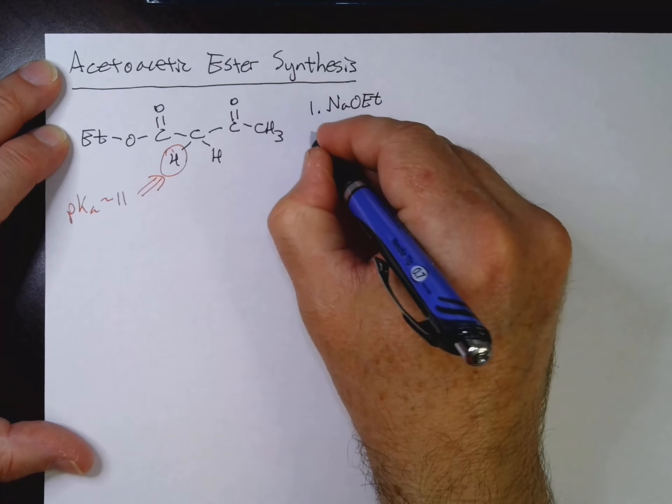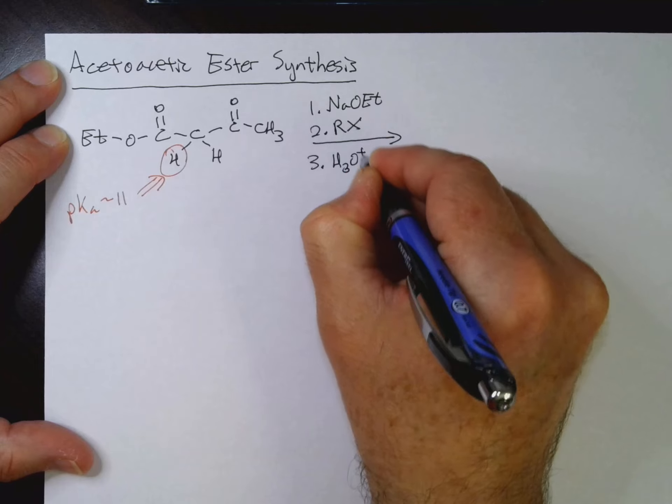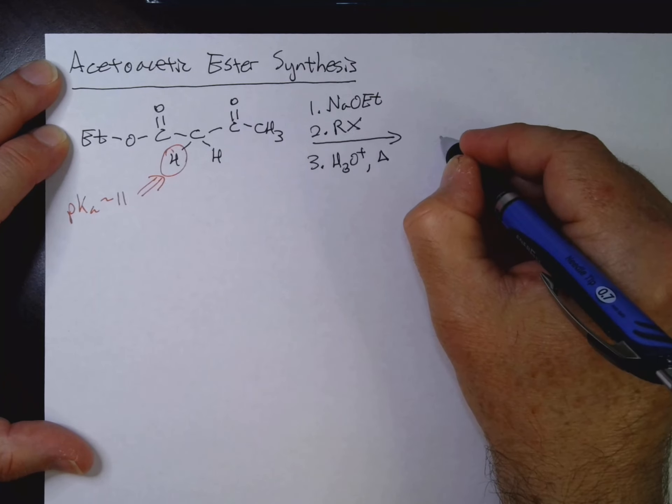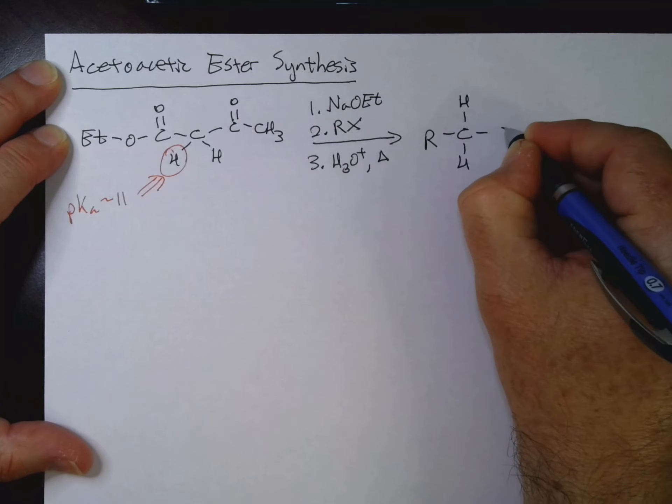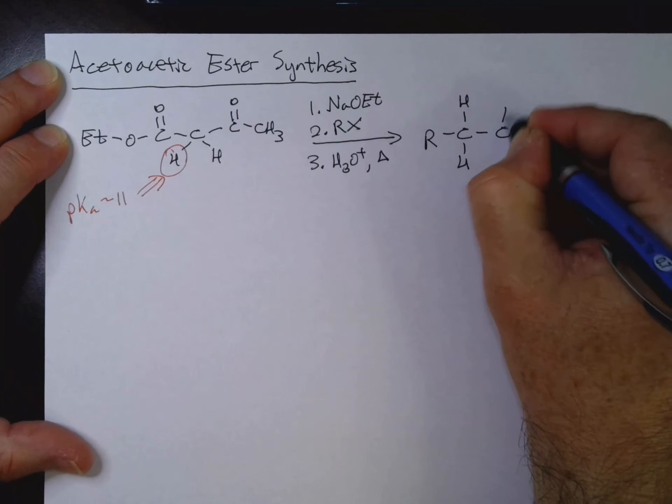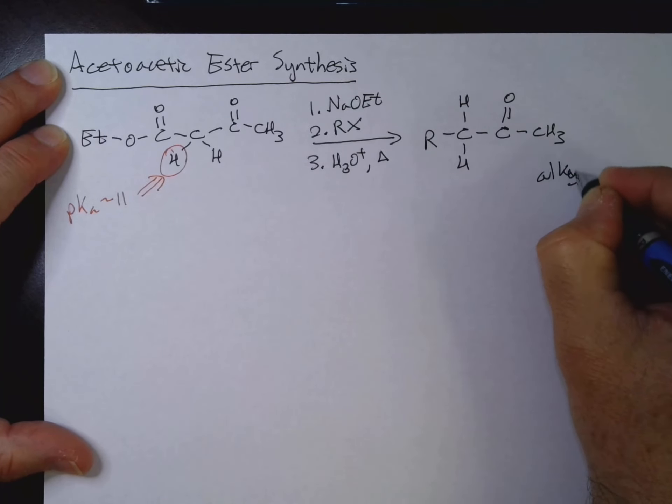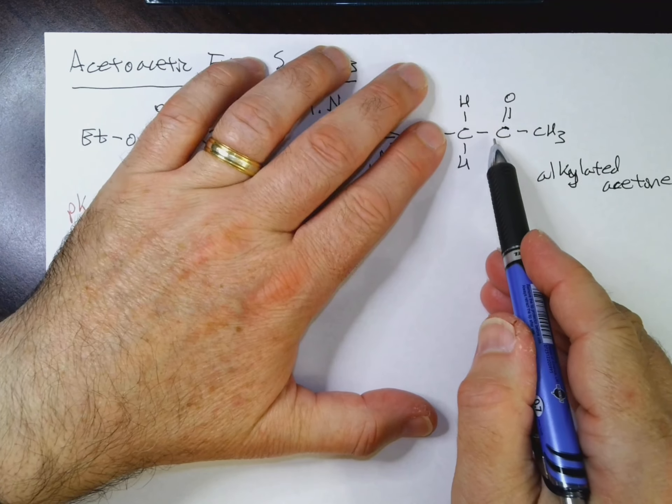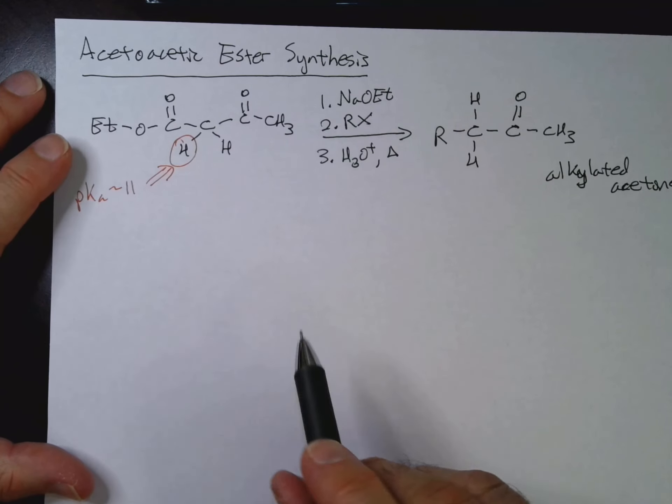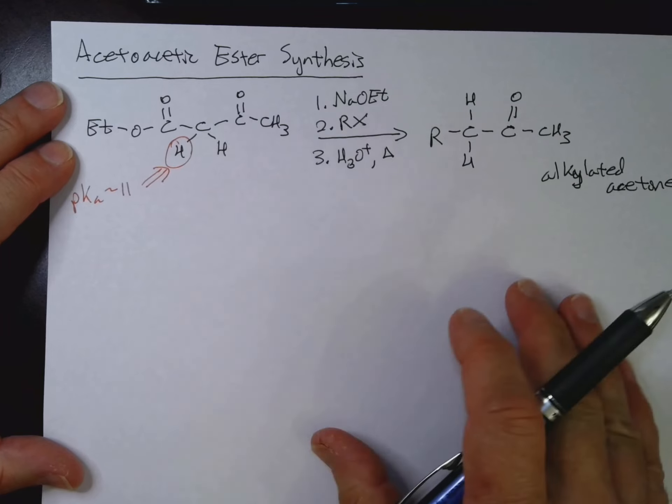NaOEt followed by R-X and then H3O+ and heat. And we will end up getting C double bond O-CH2-R-CH3. So now we have a ketone or an alkylated acetone. So the acetone with an alkyl group, so we've made a ketone. So these are some kind of good ways to make carboxylic acids and ketones.